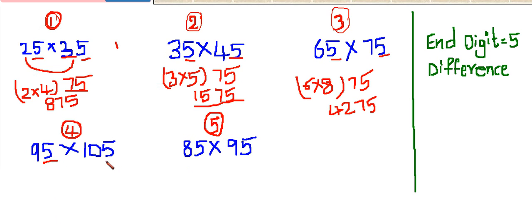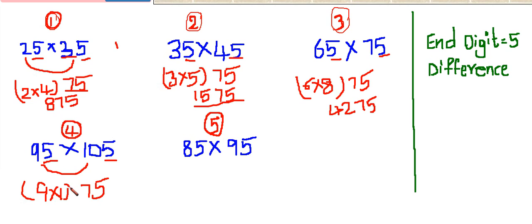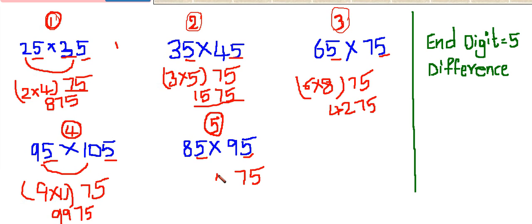See one more example. Here also the unit digit is 5 and the difference of the two numbers is 10. So the first two digits are 75. And 9 into the next digit of 10, which is 11. So 9 times 11 is 99, making 9975 the answer. Another example: 95 minus 85 is 10, so we can use this trick. Write the first two digits 75, and 8 into the next digit of 9, that is 10. So 8 into 10 is 80. So 8075 is the answer.